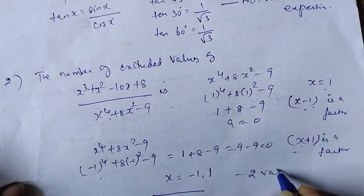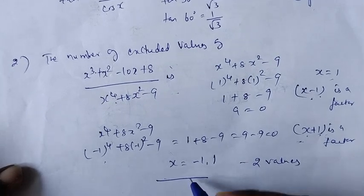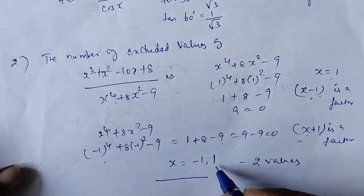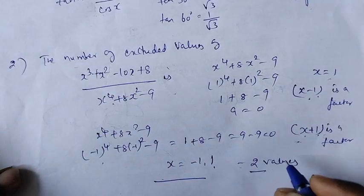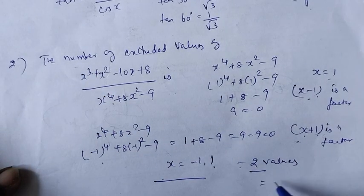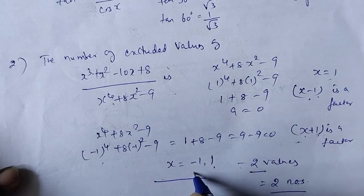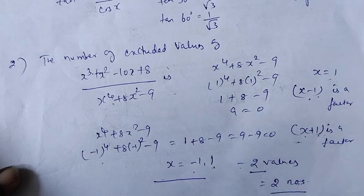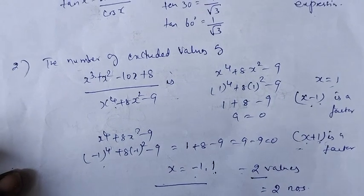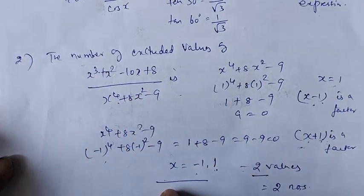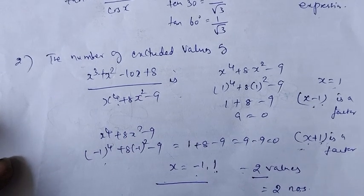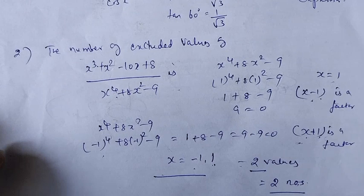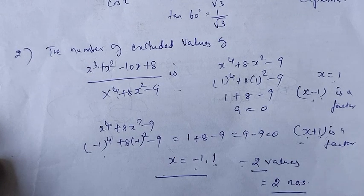Therefore the excluded values are x equal to 1 and x equal to minus 1. The number of excluded values is two. So the answer is two excluded values: x equal to minus 1 comma 1. For full marks in progress check and thinking corner, this is the explanation.